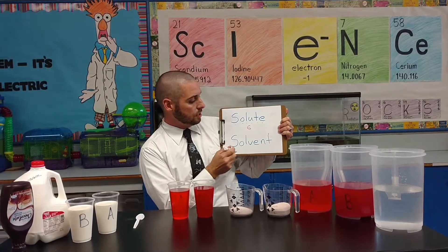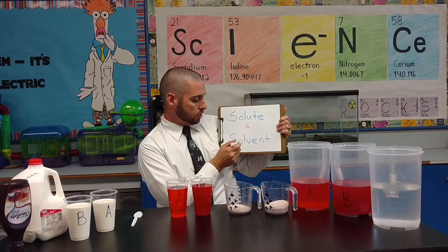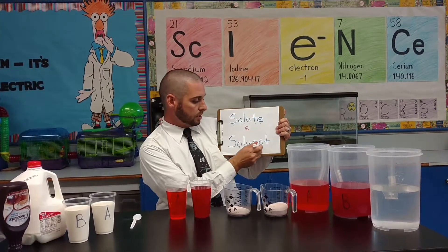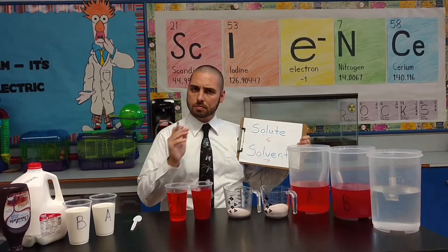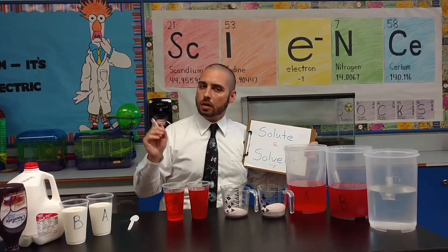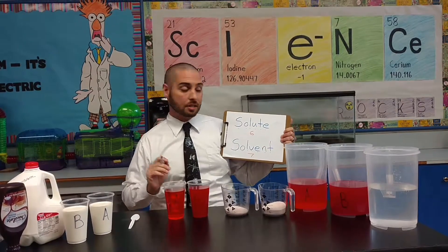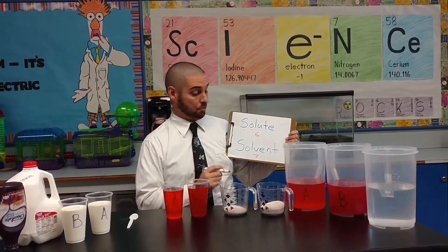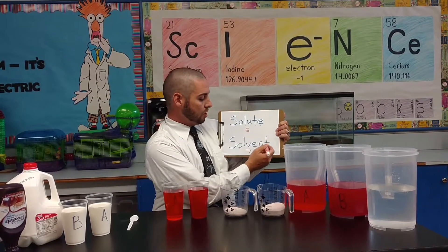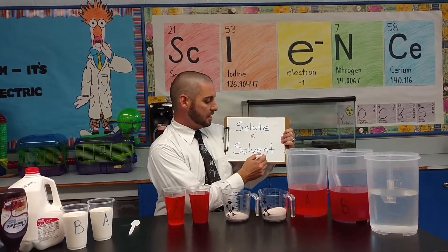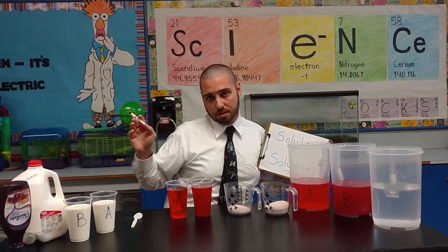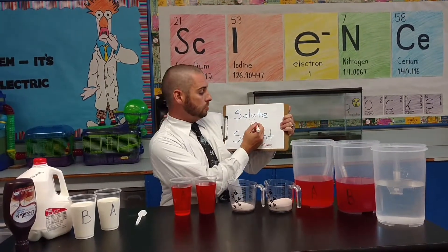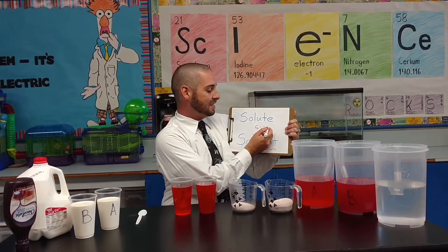That's six letters in solute. And then let's check out solvent — seven letters in solvent. Now, solvent means the substance there is more of in a solution, and solute means the substance there is less of. Solvent has more letters, so solvent equals more. Solute has only six letters, so that's less.